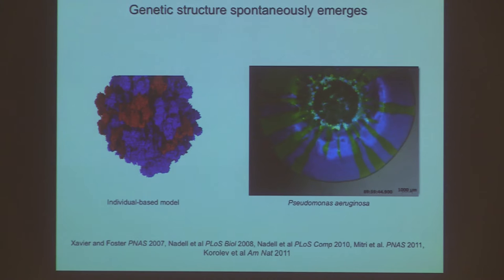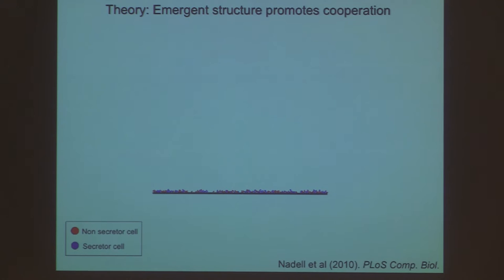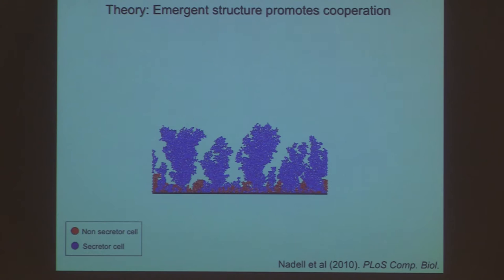In Hamilton's terms, we get family groups — assuming these were different families originally — for free as cells grow. Theoretically we can show this matters: it can generate the evolution of a cooperative trait — one of these enzymes — where you wouldn't normally. In the individual-based model, the red cell is now the non-secretor, and the blue cell makes an enzyme that costs itself but helps everyone else. In liquid culture, the red cell out-competes the blue. But put them in this spatial environment, and the blue will proliferate and take over, because early bottlenecks mean blue cells tend to end up next to blue cells. Once they reach a critical mass, they bloom and take over.